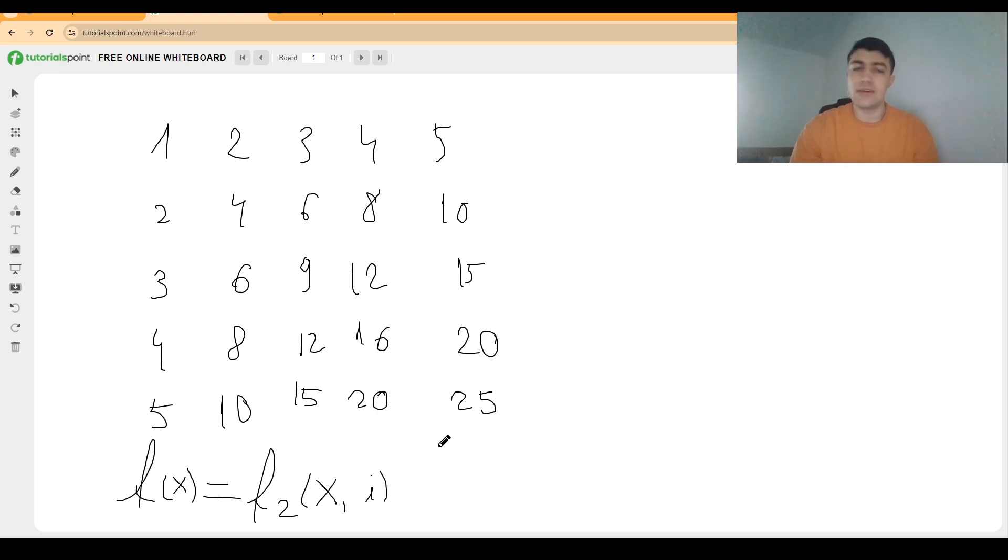For example, if we want to compute f of 7 on this grid, we can say that it's f2(7, 1) plus f2(7, 2) and so on. So it is easy to see that we can reduce this to a sum of function values.